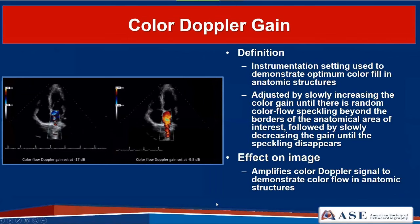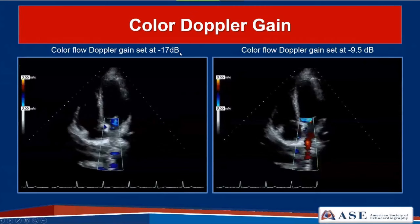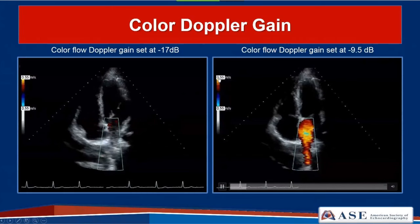The color Doppler gain feature is used to demonstrate optimum color fill in anatomic structures. To optimize it, start by turning your color gain all the way up until you see speckles just outside your area of interest, then slowly turn it down until you have fill within the structure of interest with no more speckling outside. It amplifies the color Doppler signal to demonstrate color flow. For example, imaging the pulmonary vein at minus 17 dB gain shows no fill; increasing gain to minus 9.5 dB allows the pulmonary vein to fill in—without changing the scale at all.